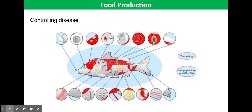Another advantage of fish farms is that you can control disease. Fish are given antibiotics to increase their resistance to diseases and minimize the spread of disease amongst the populations, hence increasing chances of survival.